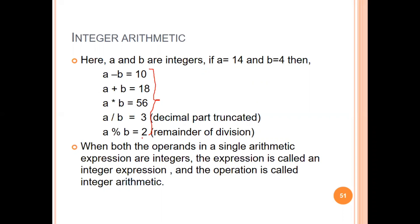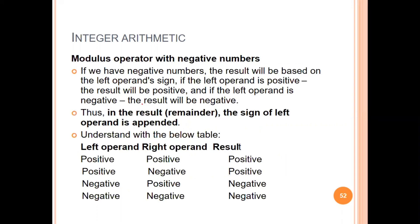Similarly, the remainder from integer division will depend on the integer arithmetic. Both A and B are integer types, so the operation is integer arithmetic. In the case of the modulus operator, we may also have negative numbers as operands.